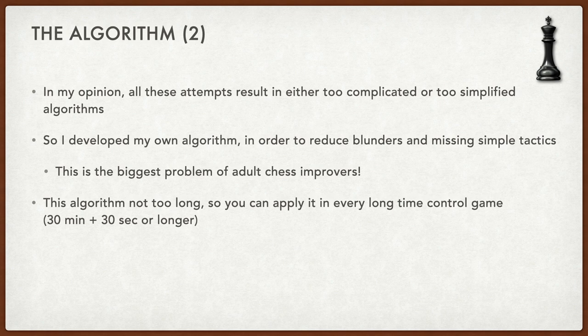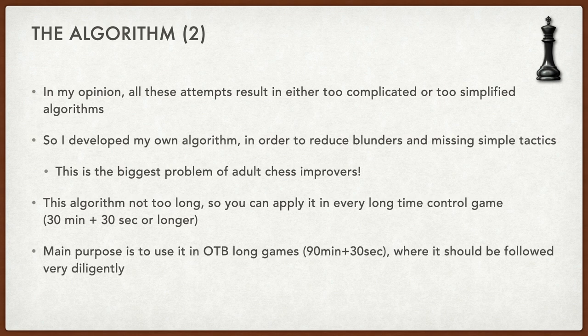This algorithm is not too long — it's three steps, each consisting of a few very simple logical questions. I think you can apply it in every long time control game you play, at minimum 30 minutes plus 30 seconds increment or longer. The main purpose is to use it in over-the-board long games. Classical rated chess is 90 minutes plus 30 seconds increment, and this is where this algorithm should be followed most diligently. Let me go to the algorithm itself — I'll go step by step, then give a short summary.